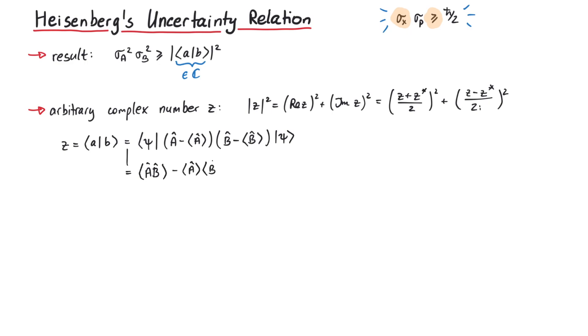By multiplying the brackets, we get four terms, from which only two remain. Note that since the expectation value of an operator is just a number, we can pull it outside of another expectation value. In the same way, we can write z star as the expectation value of BA minus the expectation values of A and B separately.